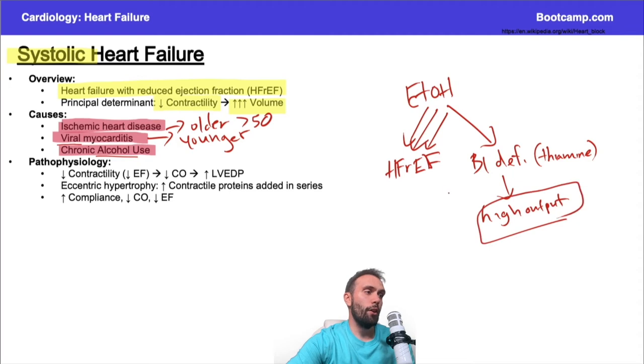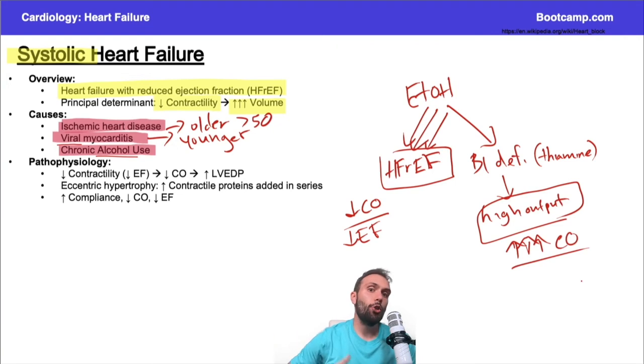Which is different than heart failure with reduced ejection fraction, because in heart failure with reduced ejection fraction or systolic heart failure, the cardiac output is going to tend to be low. The ejection fraction is going to tend to be low. In high output cardiac failure, initially at least, the patient is pumping out too much blood. The heart's working too hard, and eventually it'll burn out. But just keep that in mind.